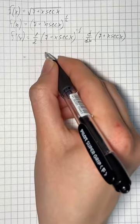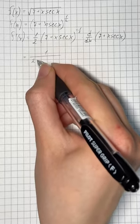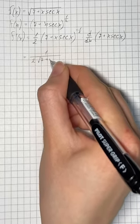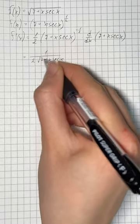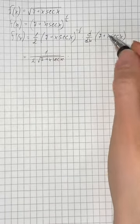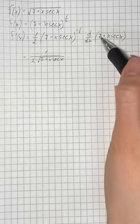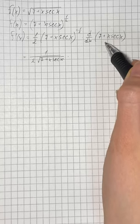So that's going to be 1 over 2√(7 + x·sec x). The derivative of 7, which is constant, is going to be 0.